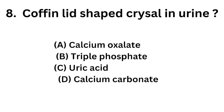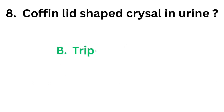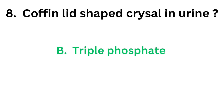The coffin-lid shaped crystal in urine corresponds to option C: uric acid, option D: calcium carbonate. The correct answer is option B, triple phosphate. Coffin-lid shaped crystals in urine are triple phosphate.